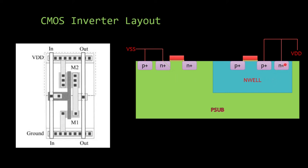This N-well and N-plus will not create any junction, but this P-plus and N-well - N-type and P-type - will create a junction. This N-plus and the P-type substrate will also create a junction. So we must make sure that without the gate voltage the device won't turn on and these junctions will not carry current from VDD to ground.